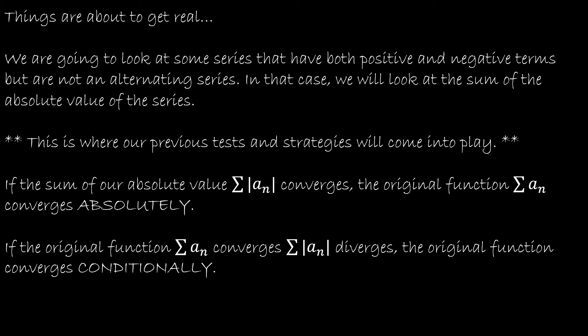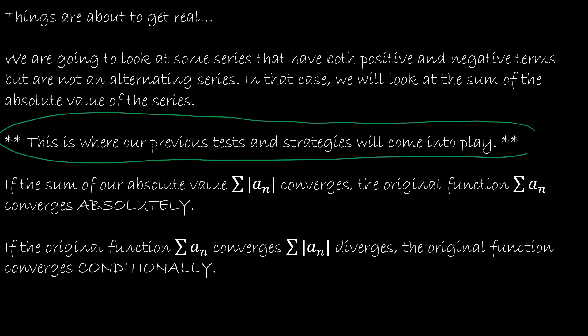This is where things get real, because we're going to look at series that are not alternating series, but they do have both positive and negative terms, and it makes it difficult to determine convergence. In each of these examples, we're going to be using new strategies about whether or not the sum will converge absolutely or conditionally, but we also have to take into account all of our previous tests and strategies — the direct comparison test, the alternating series test, the p-series, the geometric series — any of these are fair game. Make sure you have that sheet next to you as you're doing these questions.